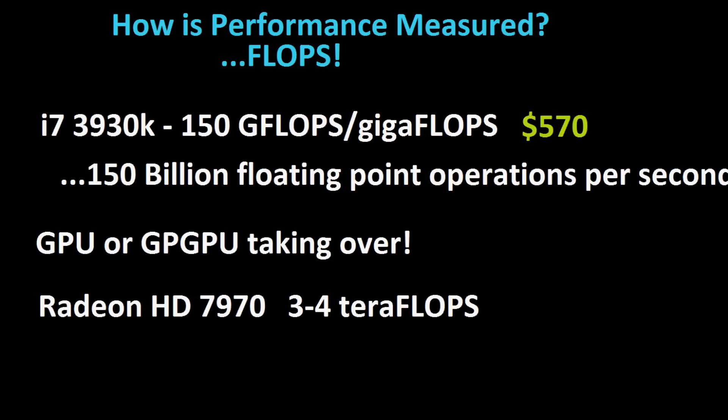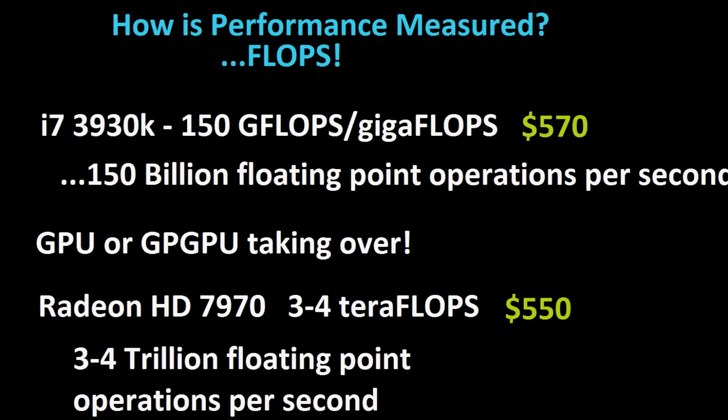GPUs or GPGPUs are far more popularly used in supercomputers and heavy processing tasks. If you get on AWS and need a processing server, you're probably actually buying GPU time, not CPU time. That honestly confused me in the early days when I was looking for cloud computing and kept finding all these graphics cards. The GPU is just a superior large-calculation device.